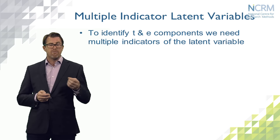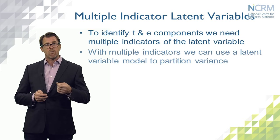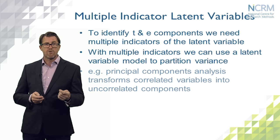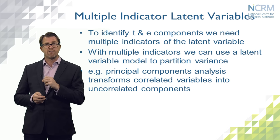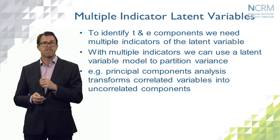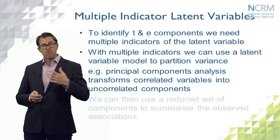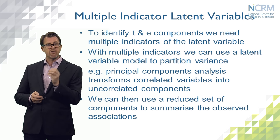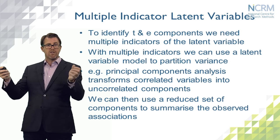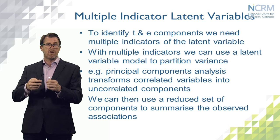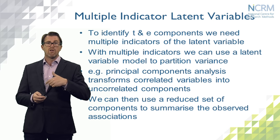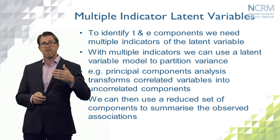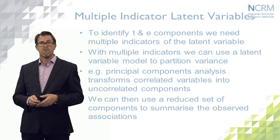We can apply many different kinds of latent variable models — principal components analysis, factor analysis, latent class models — depending on the metrics of the observed indicators in our dataset. What these are all going to do is provide us with a summary score, a reduced set of factors or components relative to the full set of indicators we start with. In doing that, they will correct for the error in each of the individual indicators and give us a better measure of the true score of the concept.